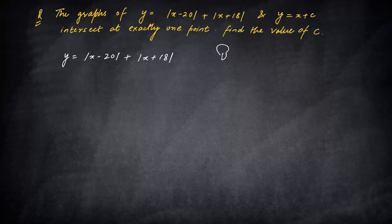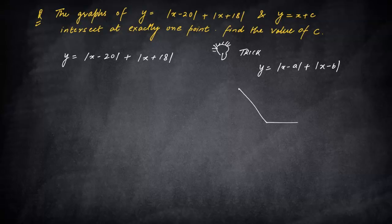Here the trick lies where you have to learn, is that if something of this sort is given: y = |x-a| + |x-b|, then we know the graph of this function will be something like this. This bucket shape is the shape of this modulus graph. If you notice, this bucket shape has three lines, three portions you can say.